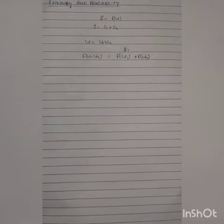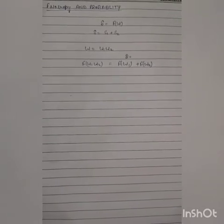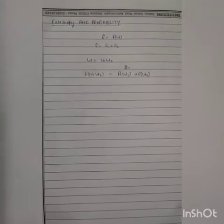Today we will discuss entropy and probability — the relation between entropy and probability. This concept came in 1896 when Boltzmann discovered a relation between entropy and probability. Boltzmann started with a simple idea: the equilibrium state of a system is a state of maximum probability. According to thermodynamics, the equilibrium state of the system is a state of maximum entropy.